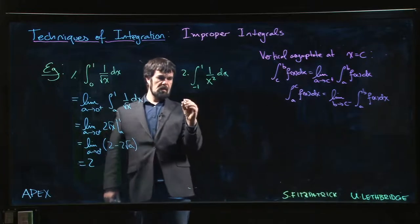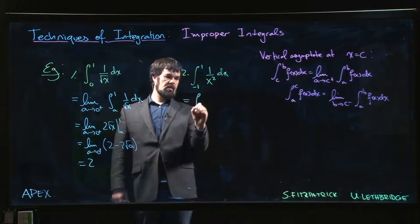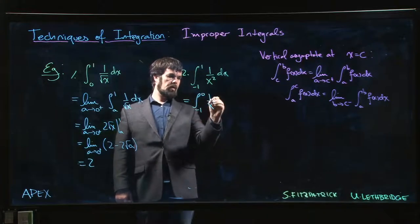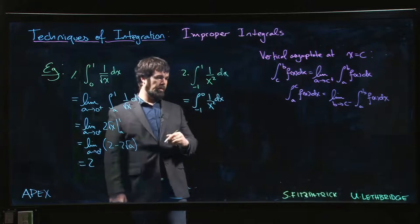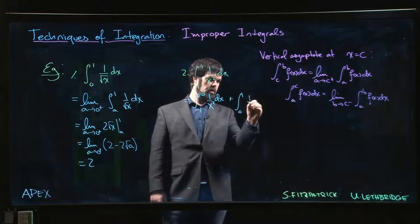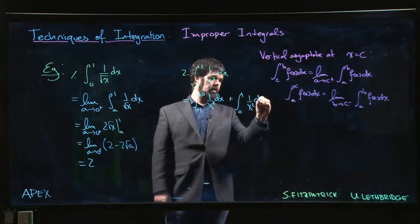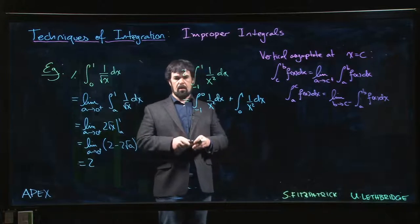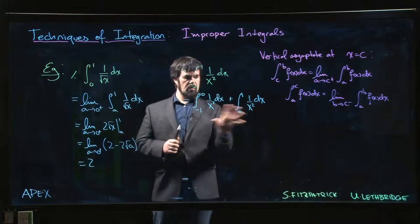Now if you want to treat this as an improper integral, what you should do is first rewrite it as the integral from minus one to zero of one over x squared dx, plus the integral from zero to one of one over x squared dx.